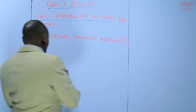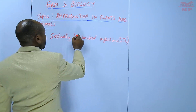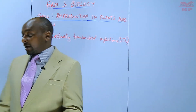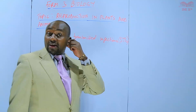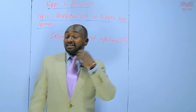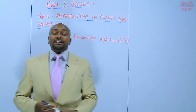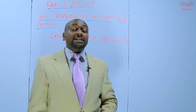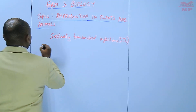Sexually transmitted infections, abbreviated as STIs — some books will call them STDs — are diseases that affect the reproductive system, or diseases that are transmitted through sexual intercourse or through sexual contacts. We shall list them.